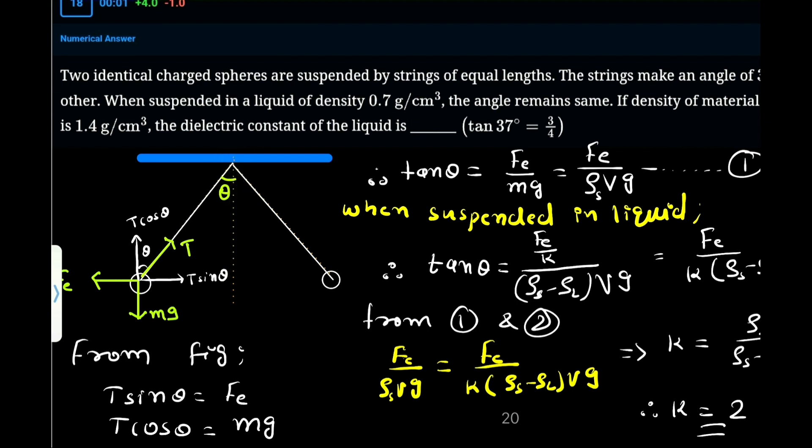In equilibrium situation, the electrostatic force pushes it in the horizontal direction, the gravitational force pulls it downward, and the tension pulls it upward.